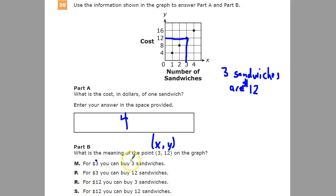So if I look at the answers: for $3 you can buy three sandwiches—nope, that's not what that means. For $3 you can buy 12 sandwiches—you wish, that is not at all how that works. Make sure that you keep the information with your label.